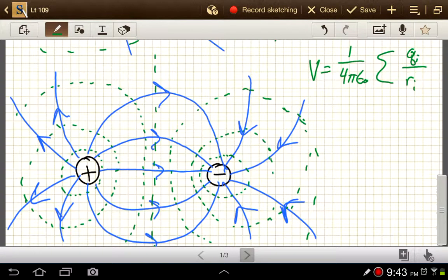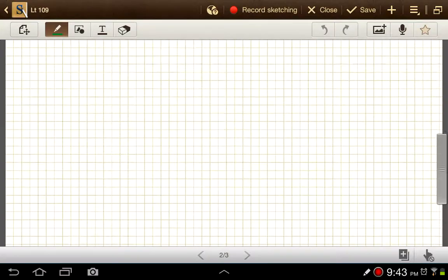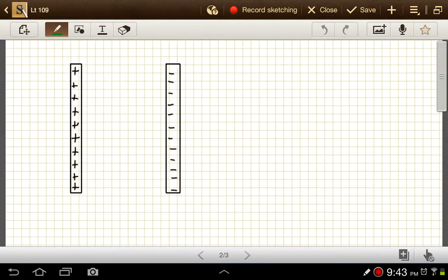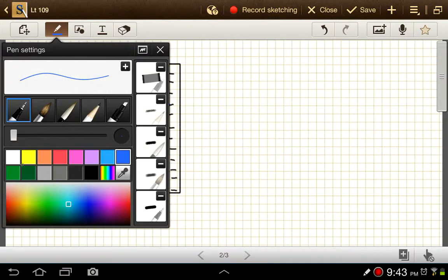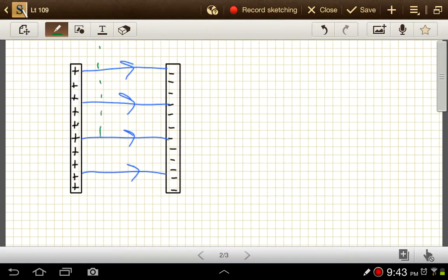And then the last one of particular importance and interest would be for a parallel plate capacitor. And we looked at the electric field on this. Inside we have basically a uniform electric field. And so our equipotential lines on this are going to be really easy to draw. Just something like this. Equally spaced because that electric field is a constant value the whole way through there.